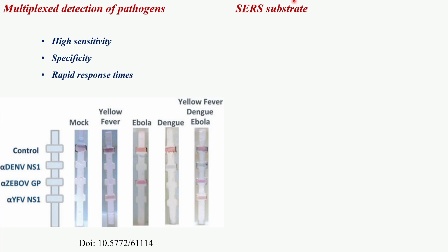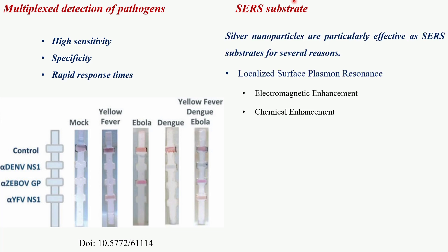Silver nanoparticles are particularly effective as SERS substrates for several reasons. First, they exhibit strong localized surface plasmon resonance (LSPR) in the visible region of the electromagnetic spectrum — a collective oscillation of conduction electrons at the surface of the nanoparticles when excited by light. This resonance creates intense electromagnetic fields near the nanoparticle surface, which are crucial for enhancing the Raman signal of molecules located in these hot spots.